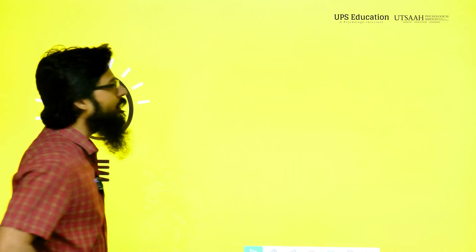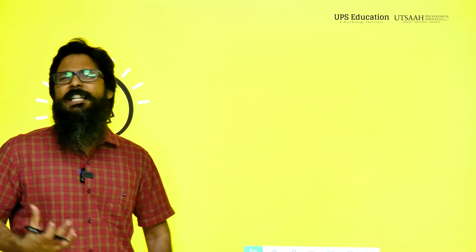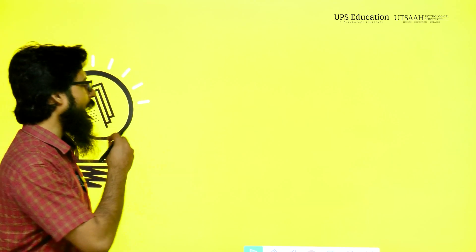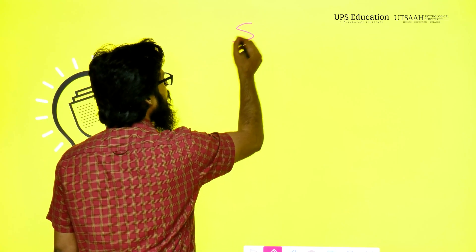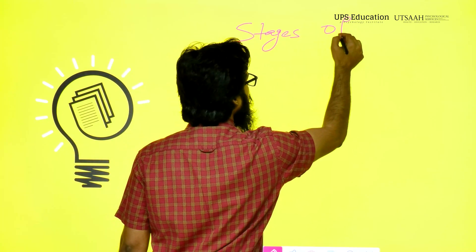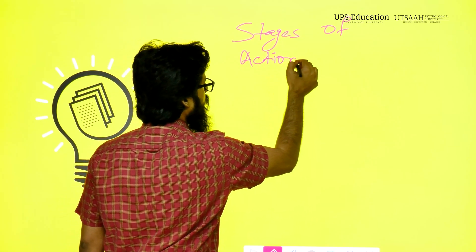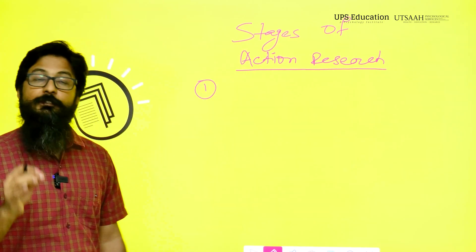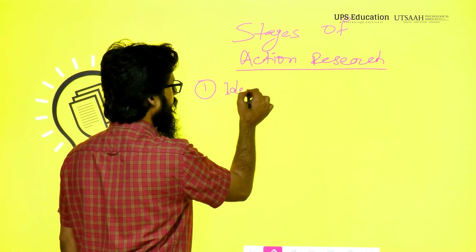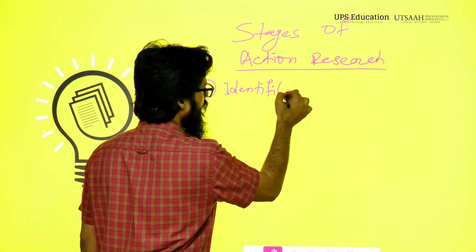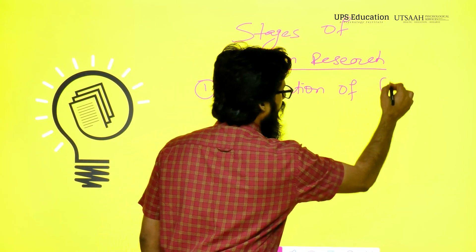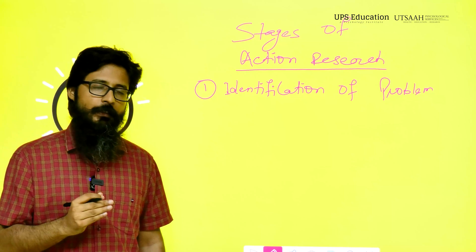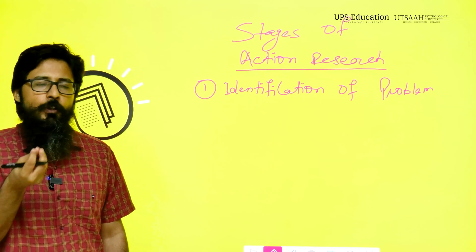Now we have to understand what the stages of action research are — whenever we conduct action research, what will be the stages. There are several stages to understand one by one. Number one, in the beginning, there will be identification of the problem. We need to clearly define what problem we want to solve.